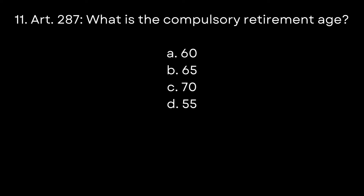Question 11. Article 287. What is the compulsory retirement age? A. 60. B. 65. C. 70. D. 55. The answer is B. 65.